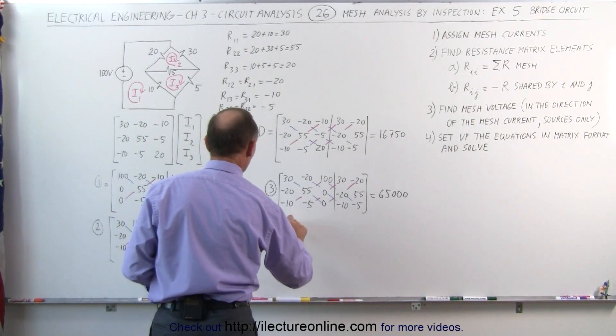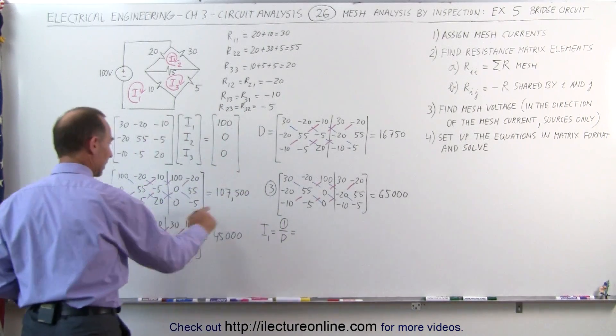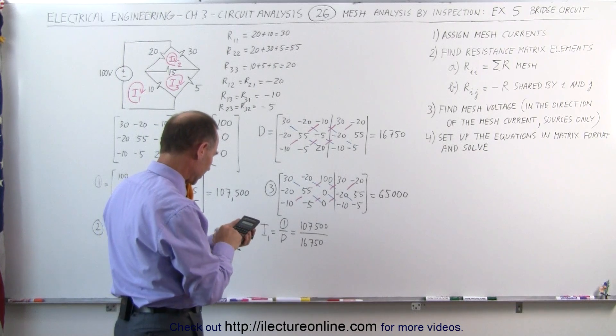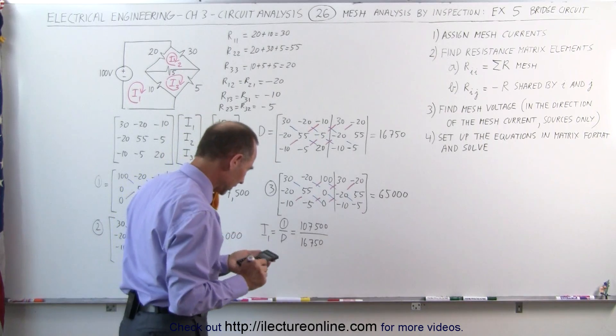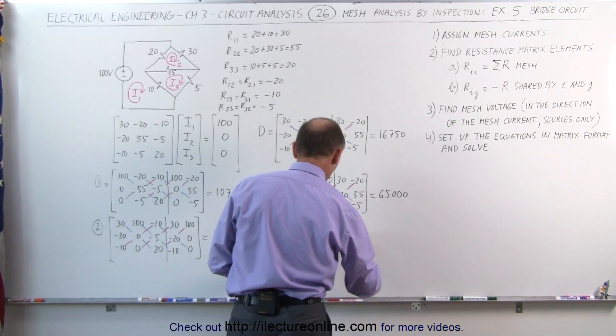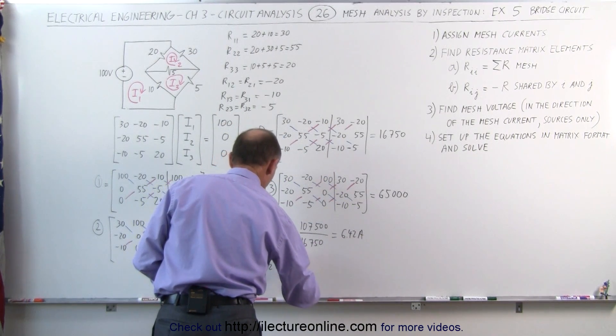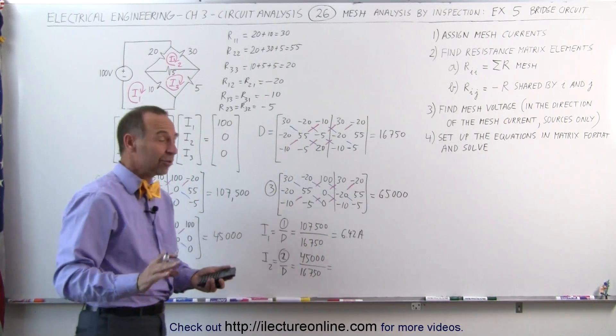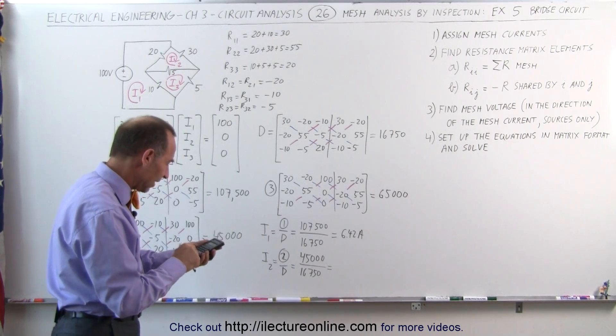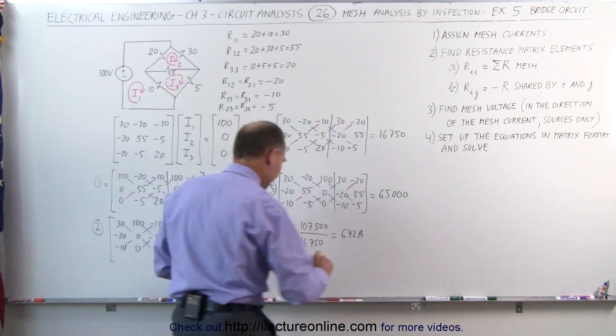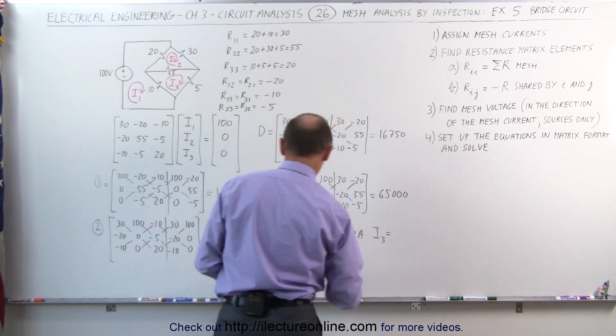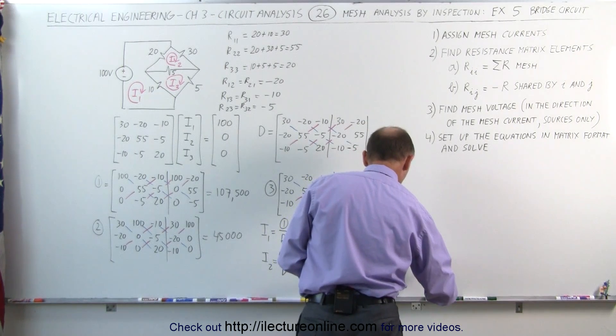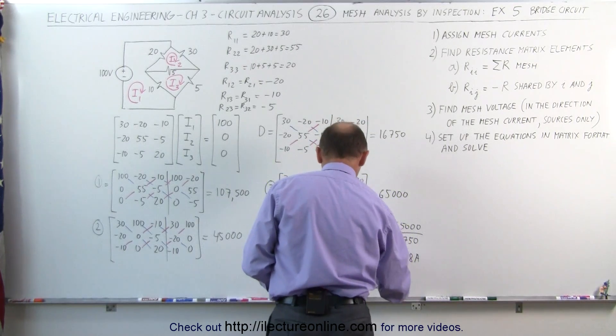Now I'm ready to find the currents I1, I2, and I3. I1 is equal to matrix 1 divided by the determinant. Matrix 1 right here was 107,500. I divide that by 16,750 equals, I get 6.42 amps. I2 can be found by taking the second matrix divided by the determinant. The second matrix was 45,000 divided by 16,750. I know it's a lot of work, but just hang in there, and it's kind of nice when you finally get the final answers. Divide it by 16,750, and that would be 2.69 amps. And then for the third current, I3 is equal to, here we take the 65,000 divided by the determinant, which is 16,750, 3.88 amps. That's for I3. So we have I1, I2, and I3.